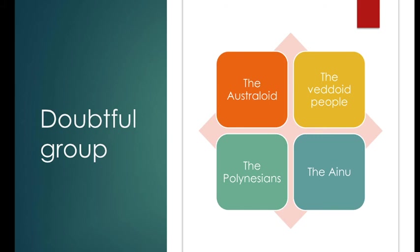Next are the Vedoids. They are found in South India and Southeast Asia, and are characterized by wavy hair and narrow heads. They share both Negroid and Caucasian genetic traits. The Vedas of interior Sri Lanka, Dravidian and Munda tribes of South India, the Moy of Indochina, and the Semang and Sakai of Malaysia are believed to be representatives of the Vedoids.